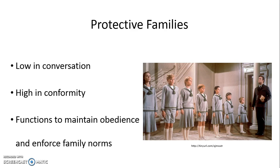Then there's the protective family, which has low conversation and high conformity. In this case there's a strong order, there's obedience, and family norms are enforced. For example, the Von Trapp family pre-Maria. Before Maria enters their life, the Von Trapp children very rarely have conversations with their father. Everything is very much out of routine and respect for his position as father, but it doesn't actually feel like genuine conversation about who they are as people. And there's a high level of conformity — they are even wearing the same outfits.